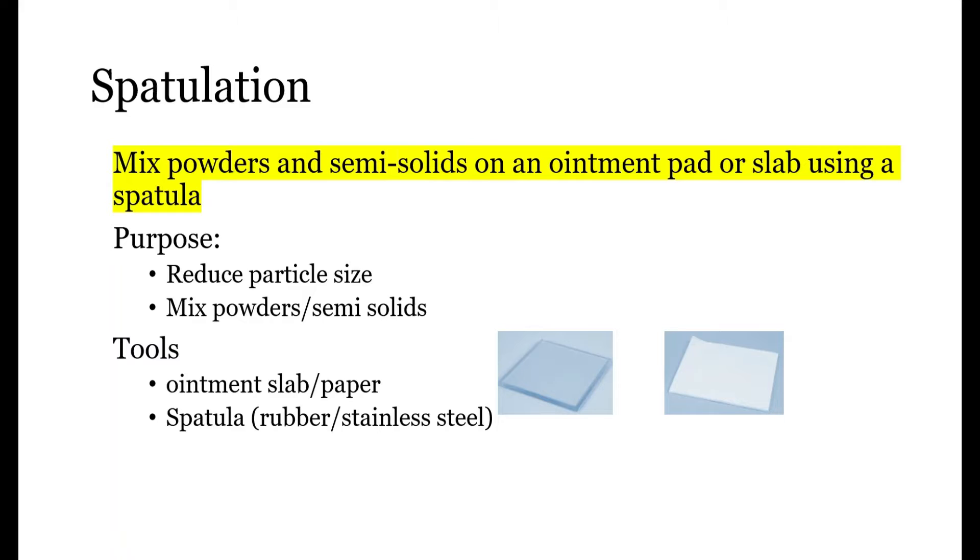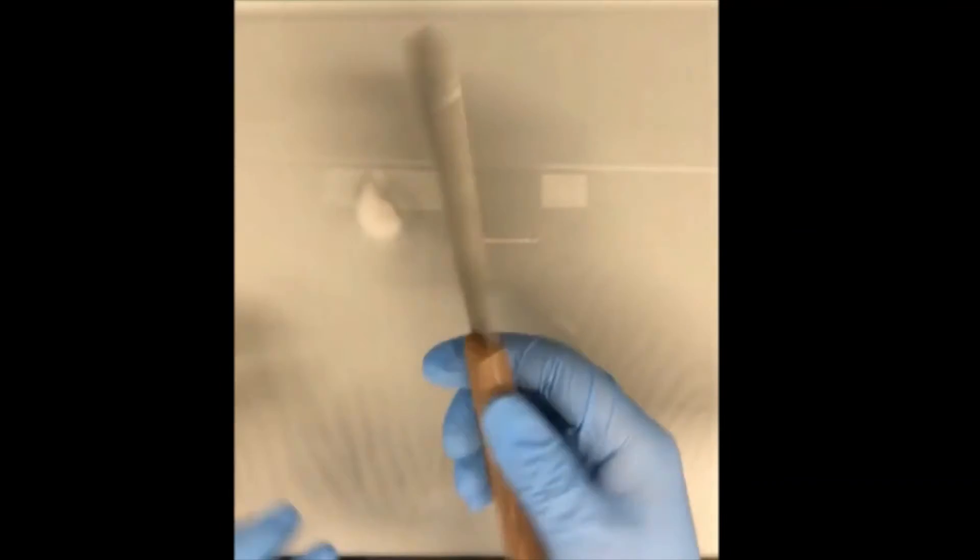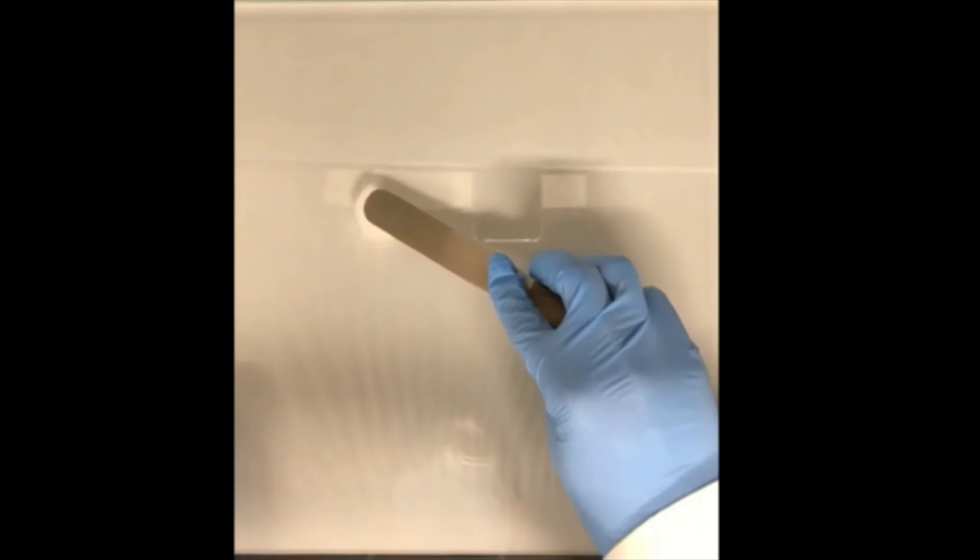You can use the glass slab or you can use ointment paper. The spatula can be made of rubber or stainless steel. In this case, we will use glass slab. To do the spatulation first, we need to put a powder to be spatulated on the slab. Next, we can utilize a stainless steel spatula to spatulate the powder by pressing or grinding the powder in a circular way.